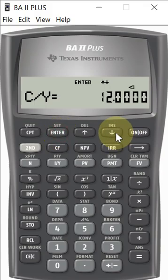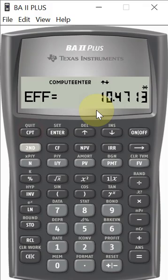Okay, so then we just go back to our effective rate, hit compute, and this gives us the effective annual rate when we're given a nominal rate and monthly compounding.